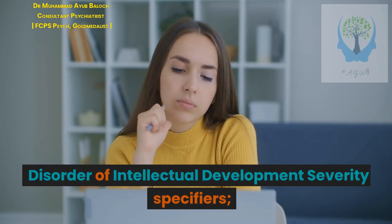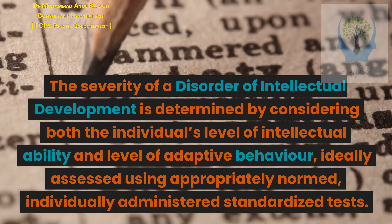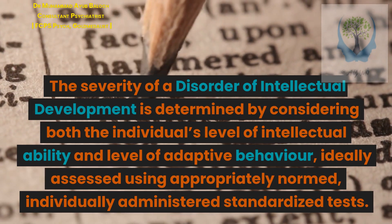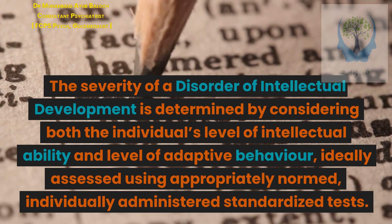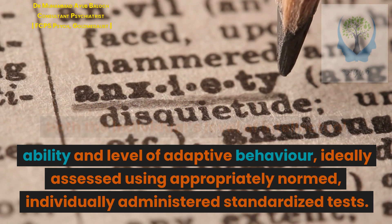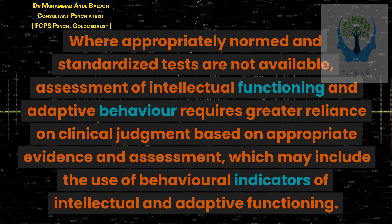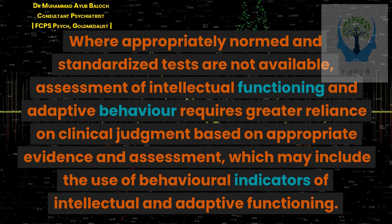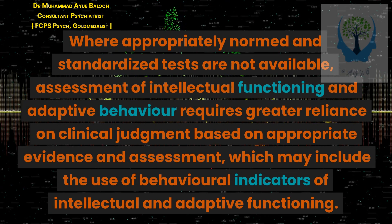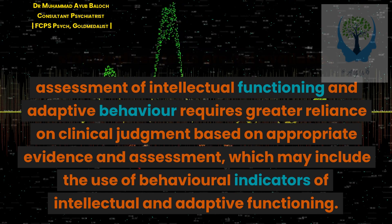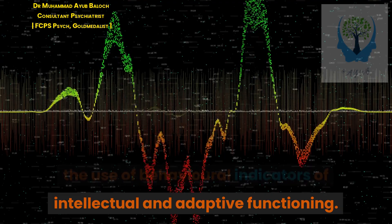Disorder of Intellectual Development Severity Specifiers. The severity of a disorder of intellectual development is determined by considering both the individual's level of intellectual ability and level of adaptive behavior, ideally assessed using appropriately normed, individually administered standardized tests. Where appropriately normed and standardized tests are not available, assessment requires greater reliance on clinical judgment based on appropriate evidence and assessment, which may include the use of behavioral indicators of intellectual and adaptive functioning.